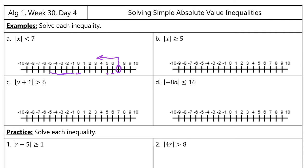And then because it's absolute value, all of these work until we get basically to negative 7. When we get to negative 7 and ask ourselves: is the absolute value of negative 7 less than 7? The answer is no, because the absolute value of negative 7 is 7, and 7 is equal to 7, but it's not less than 7. So this is actually a compound inequality — any number between negative 7 and 7 is a solution, but anything outside those two numbers would not be.